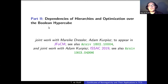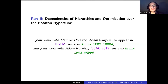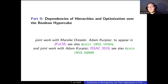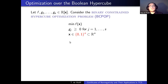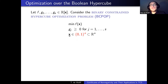Now for Part 2: two more recent results, joint with Mareike Dressler and Adam Kopisch, a theoretical computer scientist at ETH Zürich. The first paper will appear in the journal FOCM, and the second was at ISSAC two years ago. The topic is polynomial optimization on the Boolean hypercube — a special case of constrained polynomial optimization where we only allow vectors with zero-one entries. The feasible region is the vertices of a hypercube: up to 2^n feasible points.